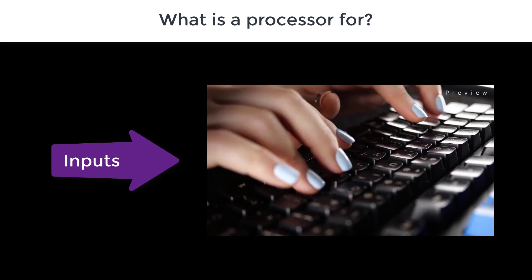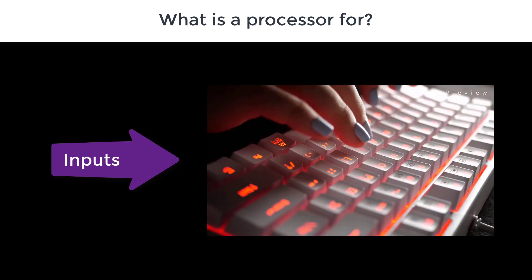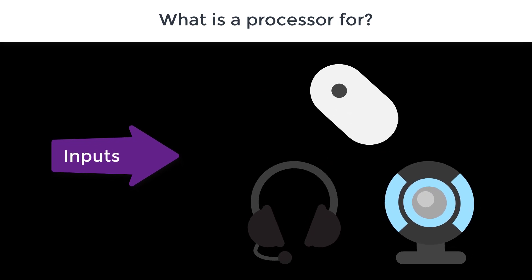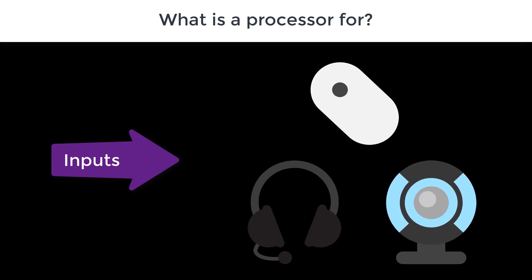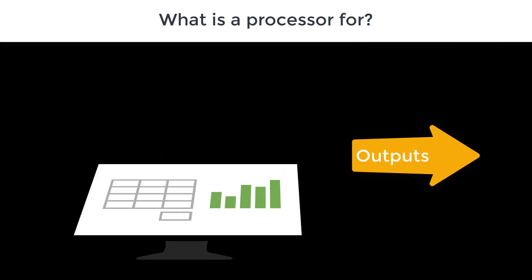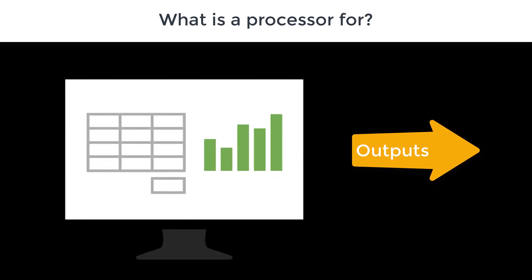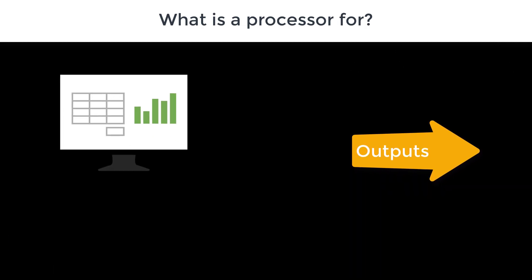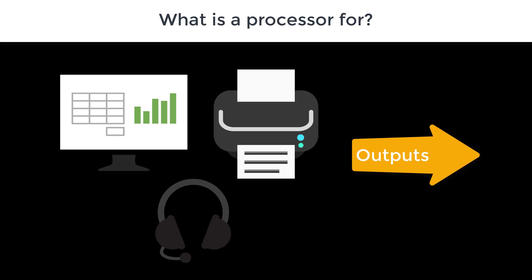We use it to type characters into the computer. A microphone is another kind of input, and so is a webcam. Outputs allow us to see the results of the processing the computer did for us. For example, the screen, a printer, or speakers are all kinds of output.